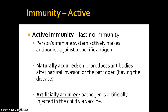Let's start by talking a little bit about immunity. Immunity can be either active or passive. Active immunity is longer-lasting immunity. It's when the person's immune system has to actively make antibodies against the specific disease or antigen. It can be either naturally acquired immunity, when the person has had the disease itself and produces antibodies, or artificially acquired when the pathogen is injected into the child, such as a virus vaccine, and the body then makes antibodies against that vaccine.